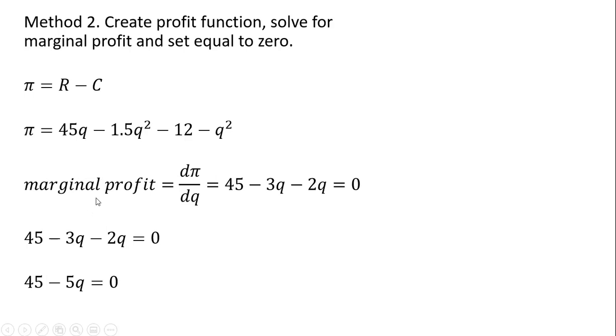So we're going to get marginal profit, which is just the increase in profit from producing one more unit of output, or the change in profit from producing one more unit of output. So it's the derivative of the total profit function with respect to q. And the derivative of 45q is 45. The derivative of minus 1.5q squared is minus 3q. Derivative of minus 12 is 0. And the derivative of minus q squared is minus 2q. We set that result equal to 0. In calculus, we do that to find a maximum or minimum, in this case a maximum.